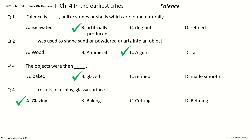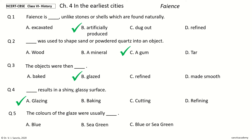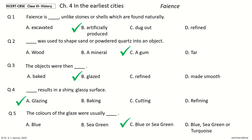Question 5. The colors of the glaze were usually dash. The options are: blue, sea green, blue or sea green, blue or sea green or turquoise. And the answer is blue or sea green. So, the colors of the glaze were usually blue or sea green.